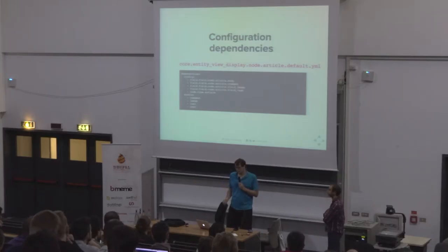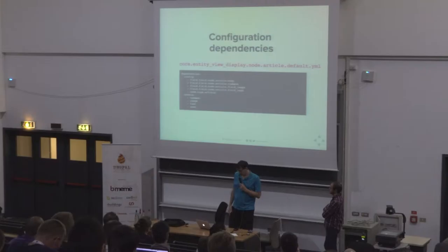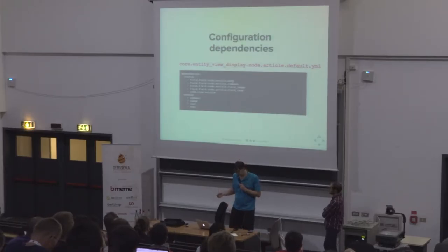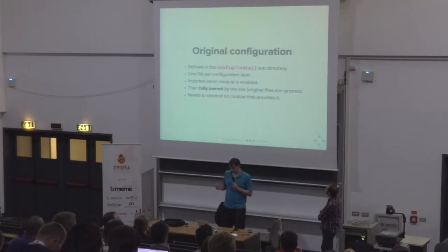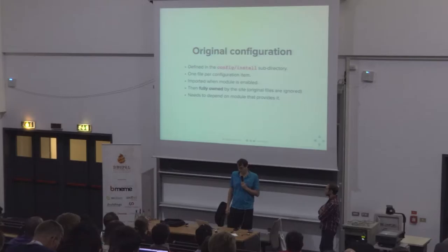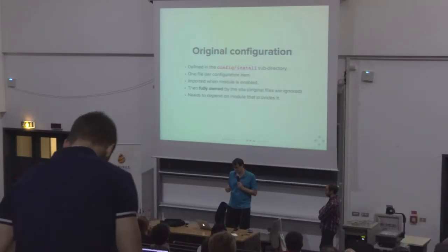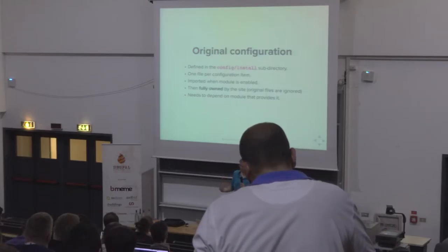Configuration can have dependencies. A configuration object can depend on other configuration — for example, the view mode of an article depends on the fields that article has. It can also depend on modules like the image module or the text module, and it can also depend on content. The original configuration lives in the config/install directory of the module that provides it. When the module is enabled, from then on it's owned by the site and can get modified by other modules or by someone clicking around.